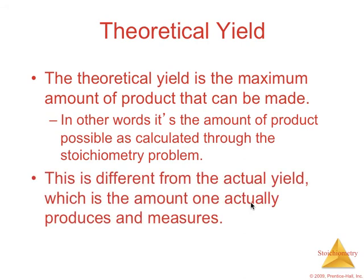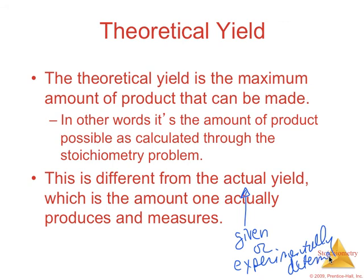The actual yield is the amount that one actually produces and measured, and this is usually the one that has to be given, given or experimentally determined. So the actual yield has to be part of the problem, or it's going to be what you determined in the lab.